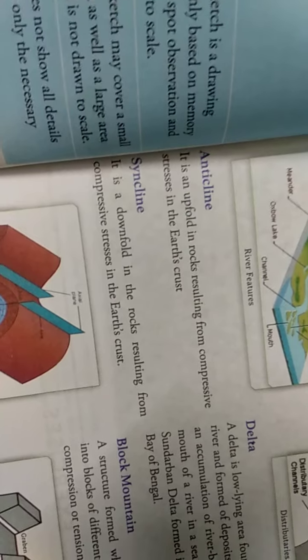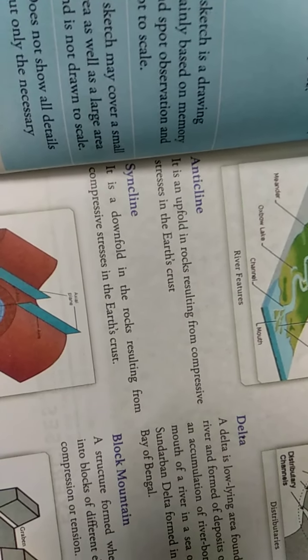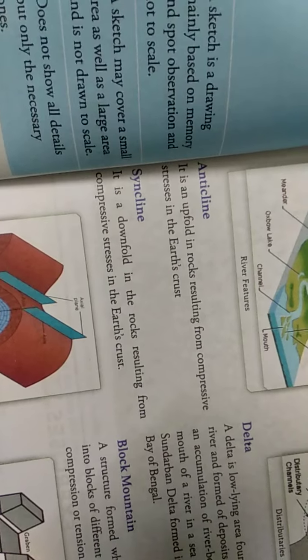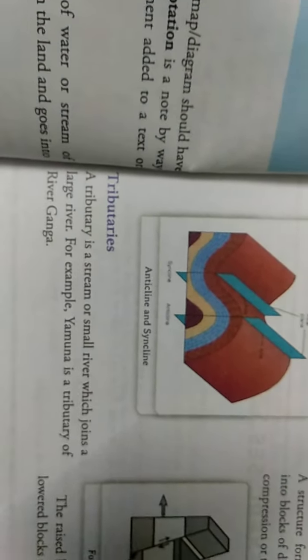And this is syncline. A syncline is a downfold of rocks resulting from compressive stress of the earth's crust. What are tributaries? A tributary is a small stream or river which joins with large rivers. Example: Yamuna is a tributary of river Ganga.